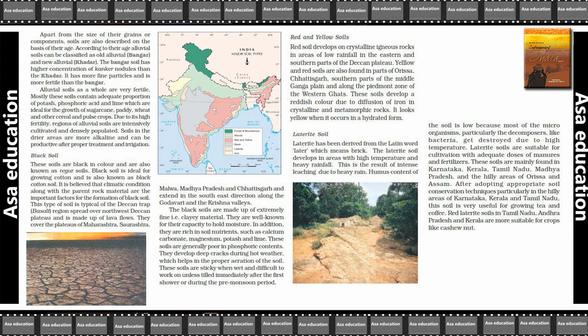This type of soil is typical of the Deccan Trap region, spread over the north-west Deccan plateau and is made up of lava flows. It covers the plateaus of Maharashtra, Saurashtra, Malwa, Madhya Pradesh and Chhattisgarh, and extends in the south-east direction along the Godavari and Krishna valleys.